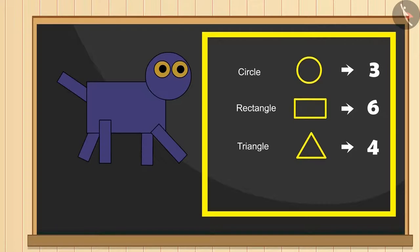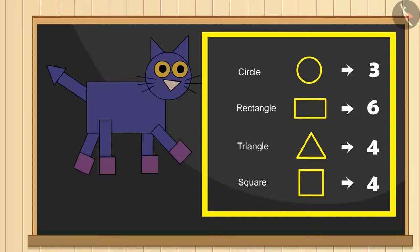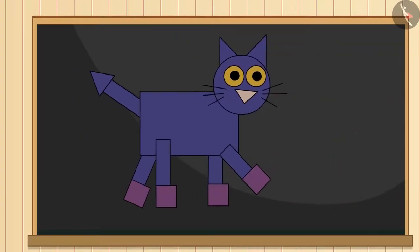Now its ears, nose and upper part of its tail can be made with four triangles. At the end, its claws from four squares. See the cat is drawn.